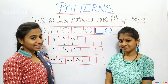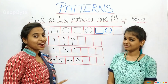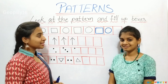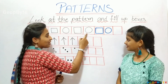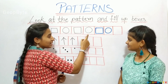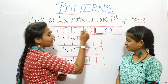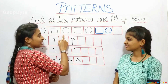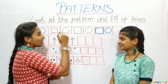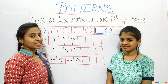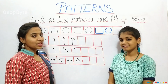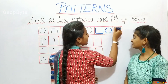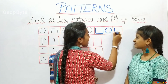Again, kids. After circle, what comes? After circle, we got a square. After circle, we got a square. So after circle, we will get a square.